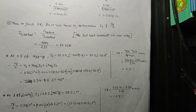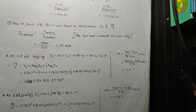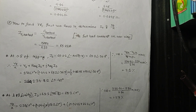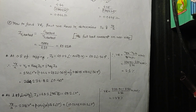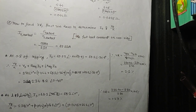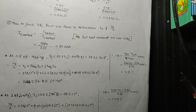Sometimes it may be asked: when will voltage regulation be positive for a transformer, and when can it be negative? Looking at Chapman Example 2.5, you can see that after the calculation...